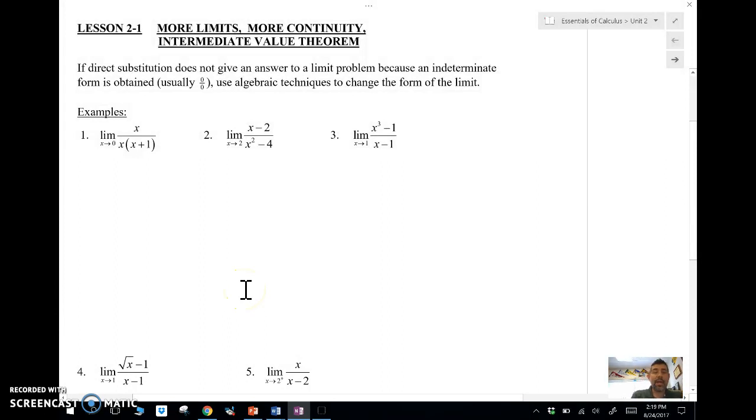Let's take a look at some examples. When we last left off talking about limits, we talked about how we can use direct substitution to find the limit. That doesn't work if we end up with what we call an indeterminate form. An indeterminate form is either zero over zero or infinity over infinity. Those are the main ones you're going to run into when dealing with limits. So whenever we have an indeterminate form, we need to do some algebraic techniques.